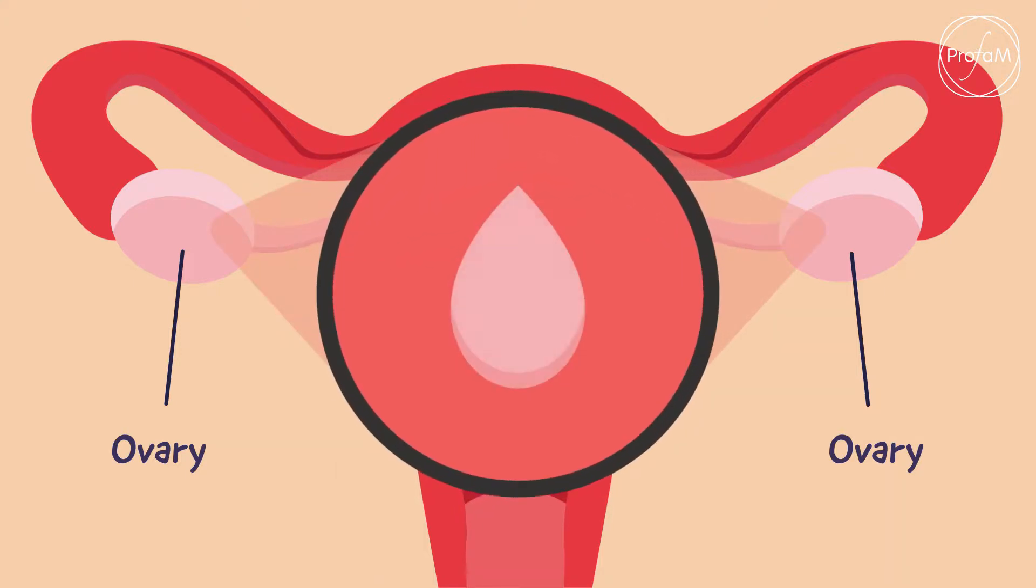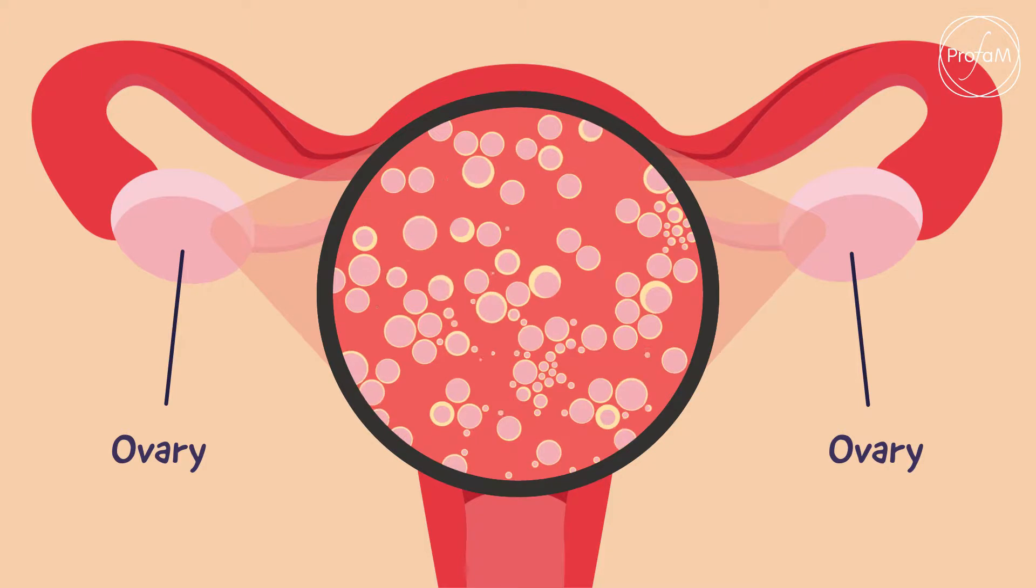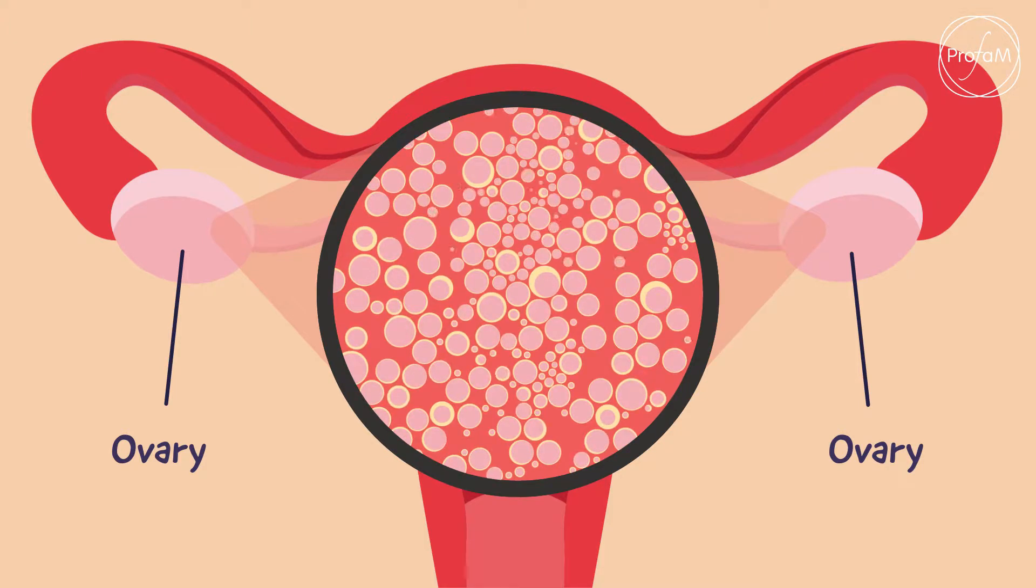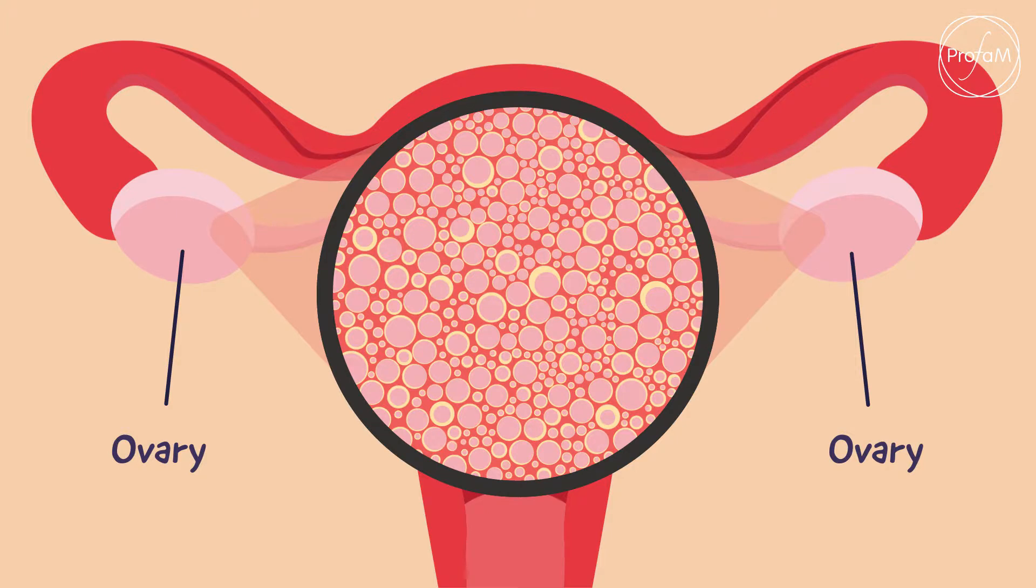The younger the woman, the more fuel she possesses. Fuel both for her fertility and hormone production. That fuel is driven by what we call the egg pool or ovarian reserve, the hundreds of thousands of tiny immature eggs.